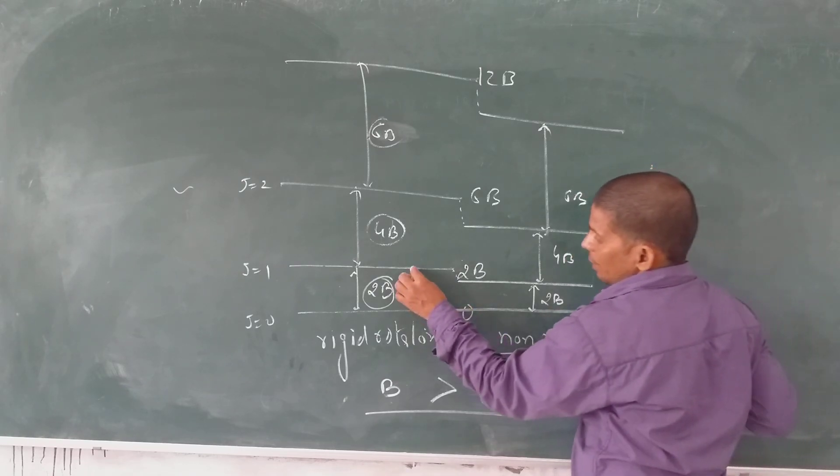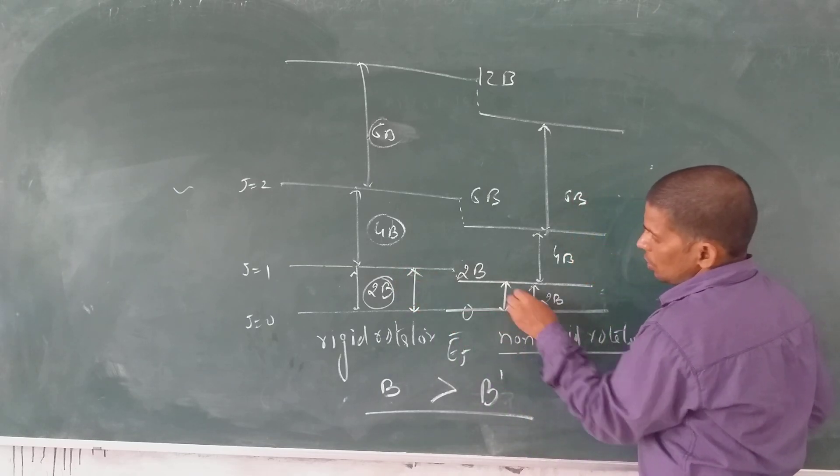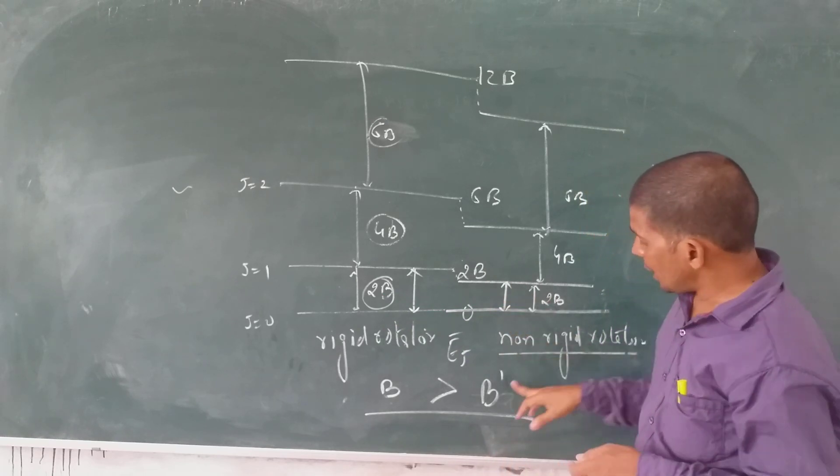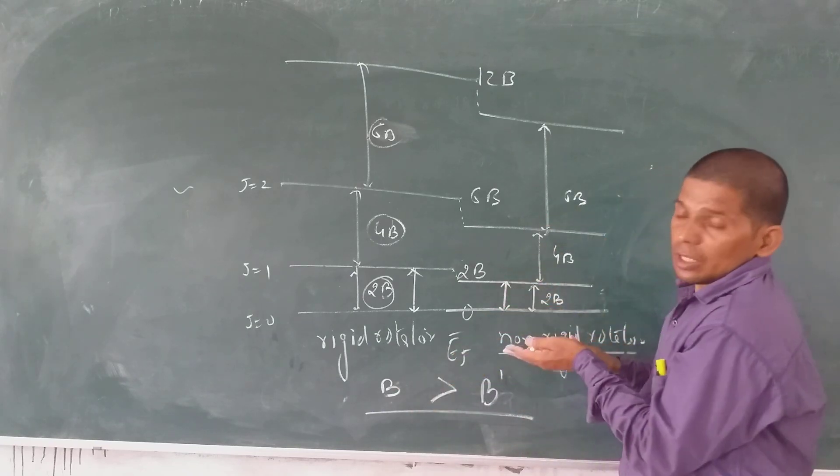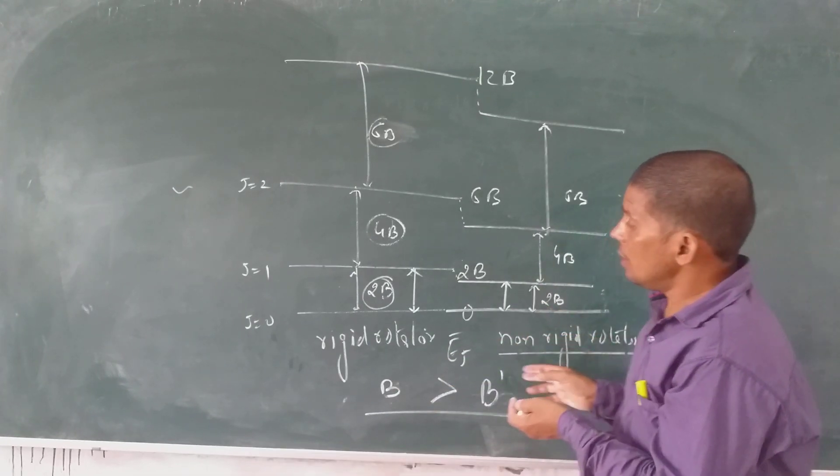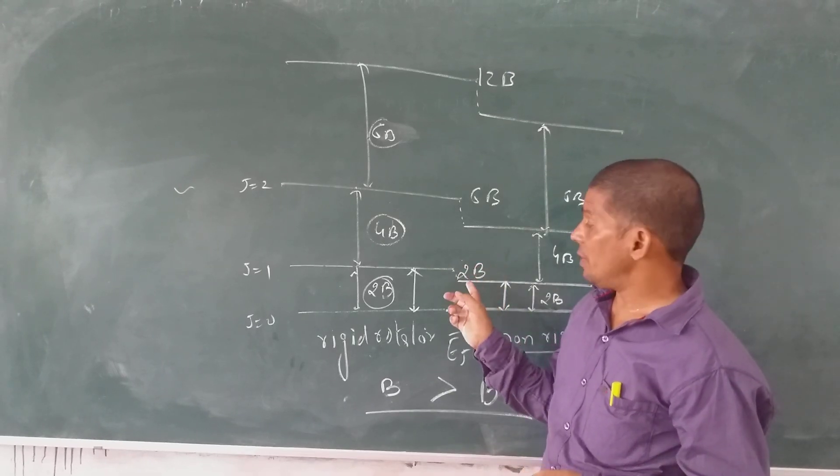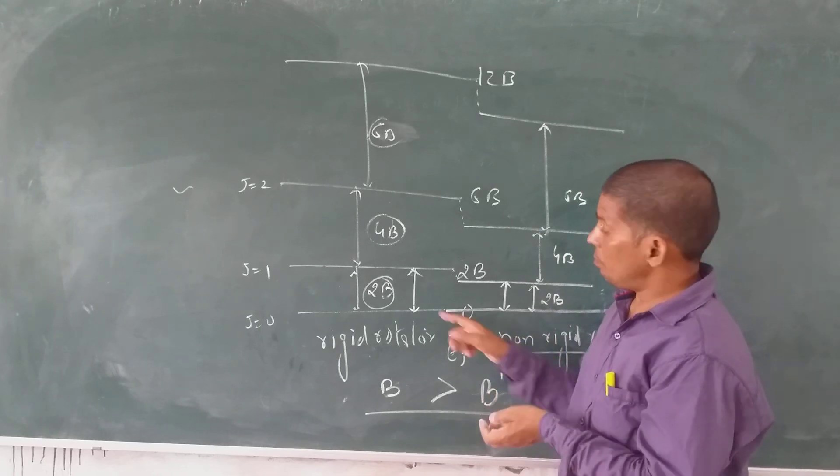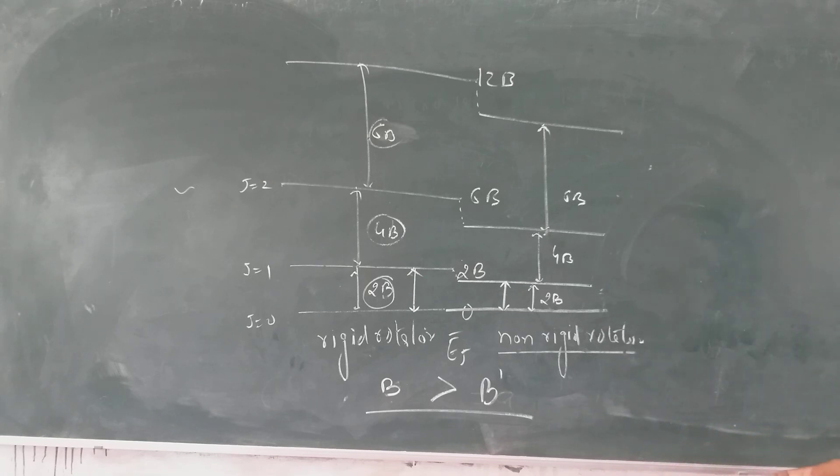Looking at the gaps: the energy levels can differ. Non-rigid energy levels have high spacing initially but the gaps become smaller. The rigid rotator has greater gaps, so the energy levels are more spaced compared to non-rigid rotator.